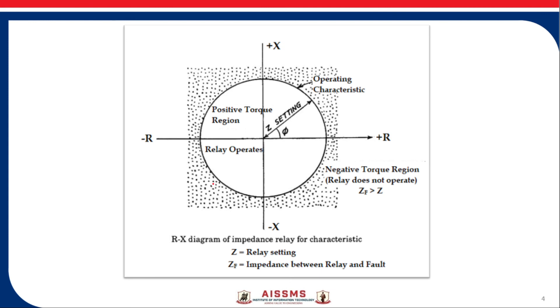The part which is outside this circle is the impedance part which is greater than predetermined value of Z. So this region is called negative torque region, and for this region relay does not operate.